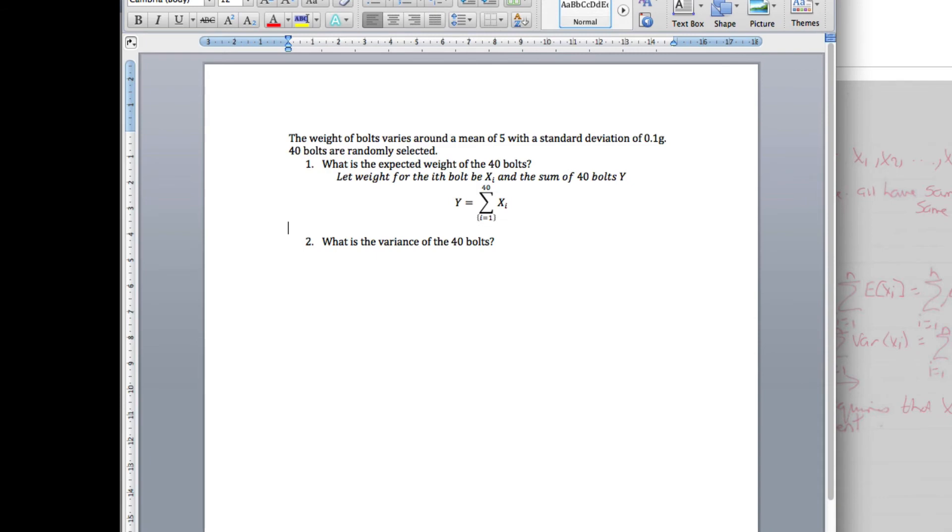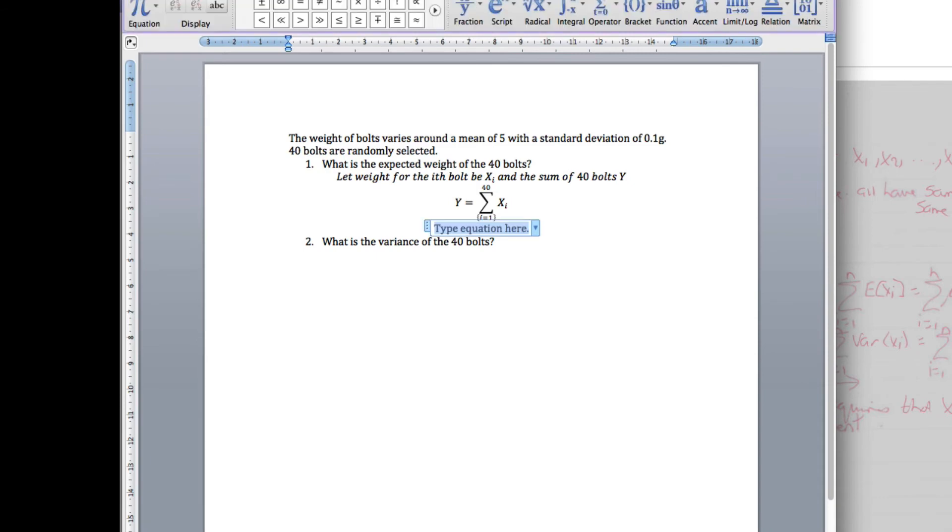We want the expected weight of y, so the expected value of y equals n times mu. In this case, that's 40 times the expected value of 5.